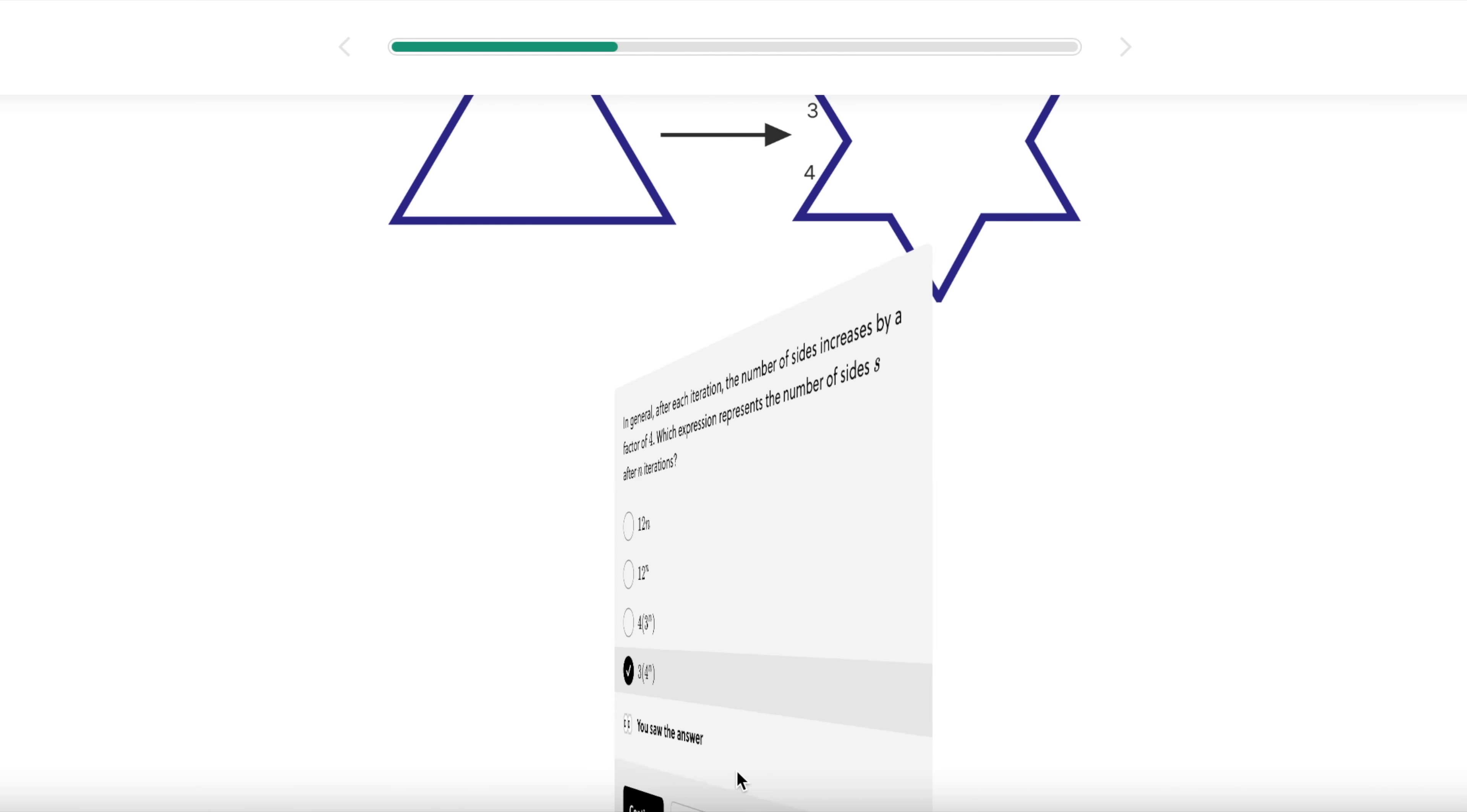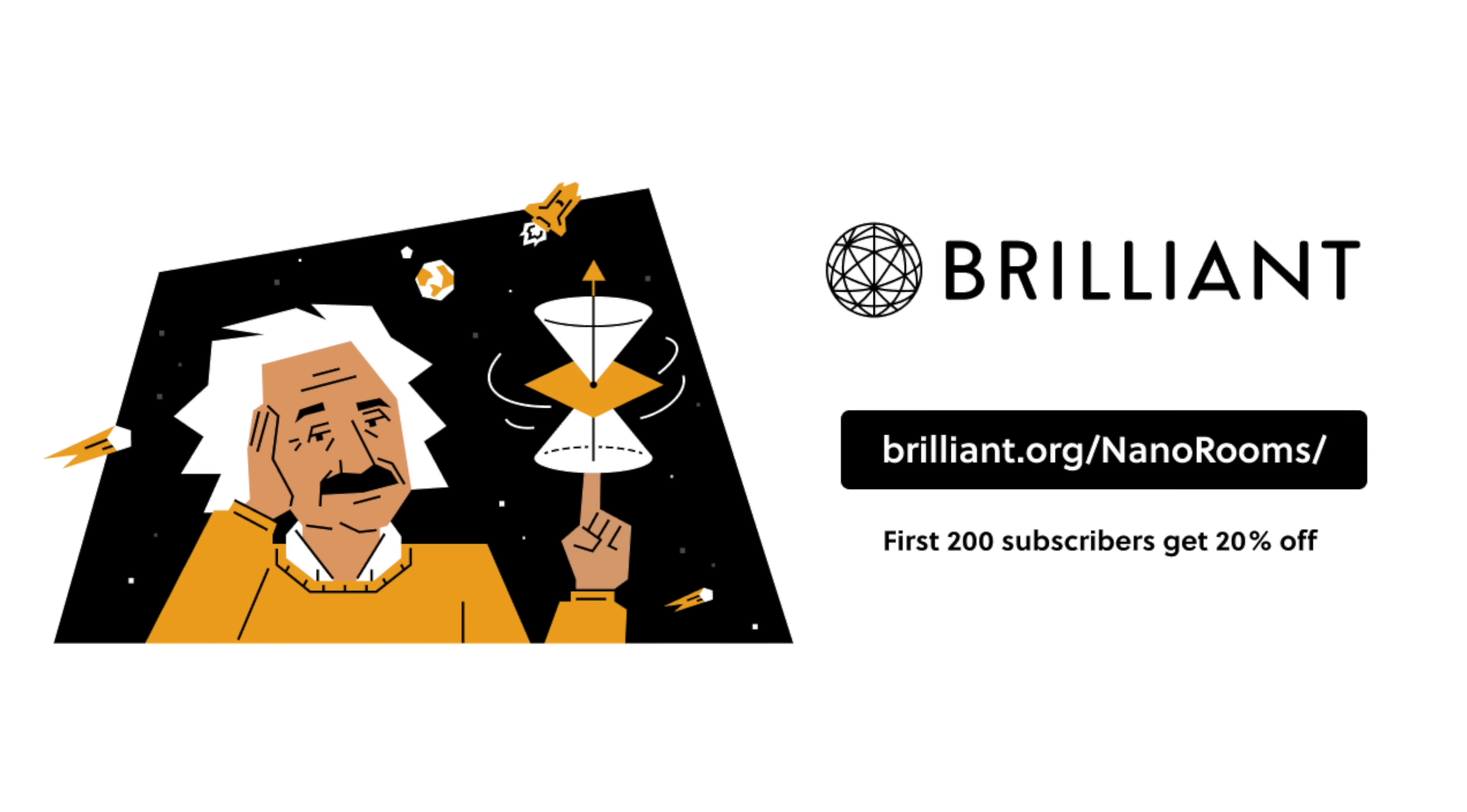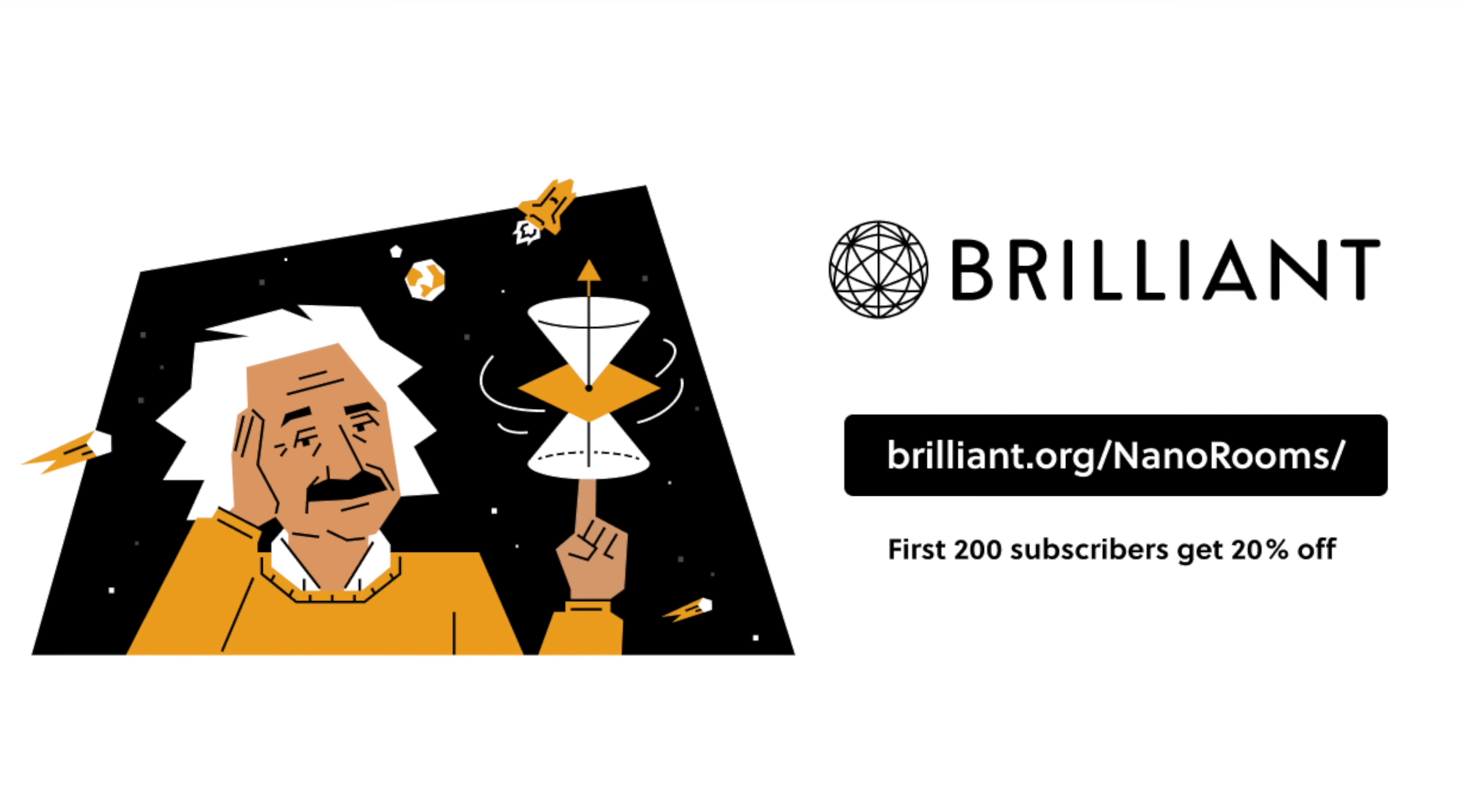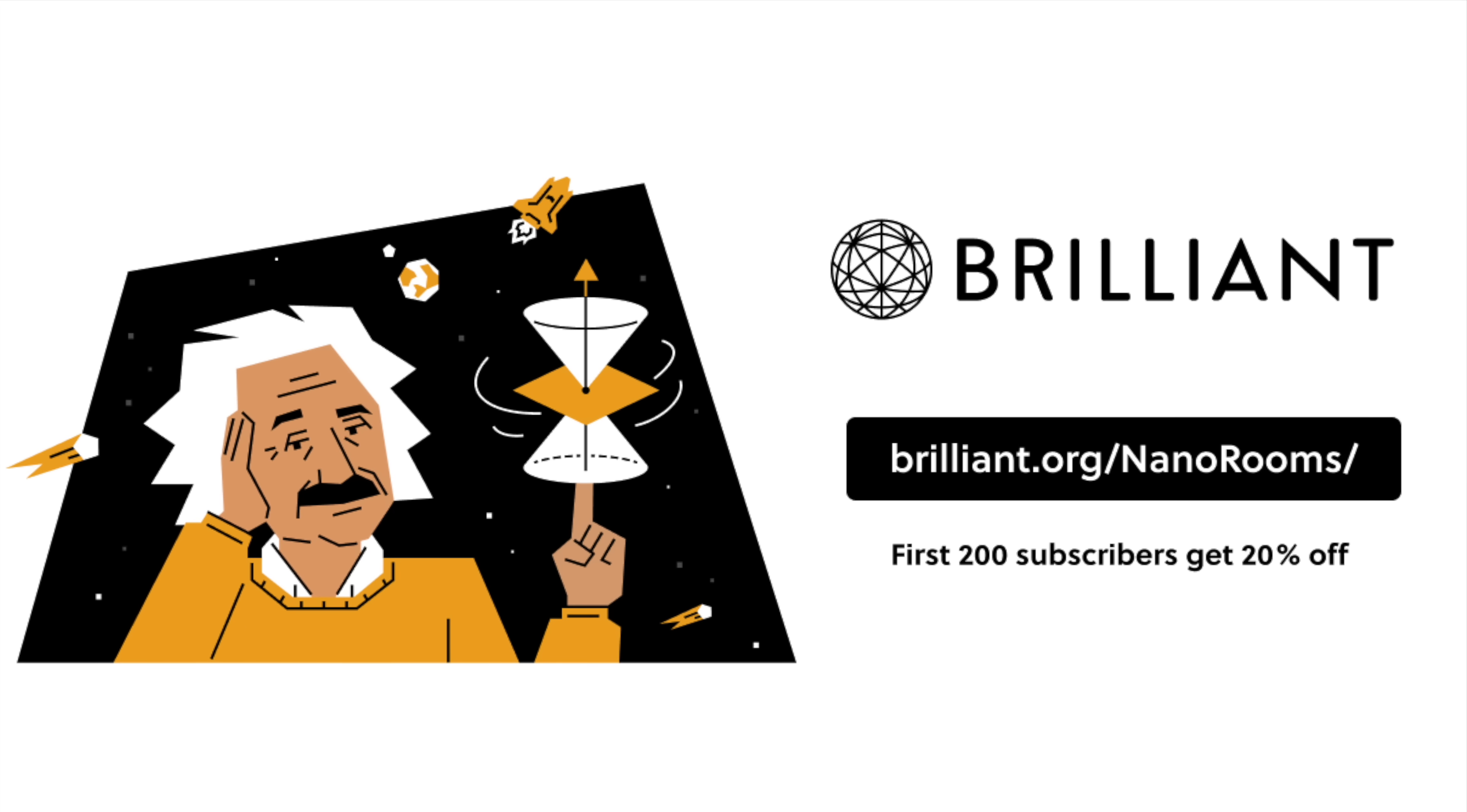Don't worry, if you can't solve a certain problem, you can always peek at the explanation. To try everything Brilliant has to offer for free, for a full 30 days, visit brilliant.org/nanorooms, or click on the link in the description. The first 200 of you will get a 20% off Brilliant's annual premium subscription.